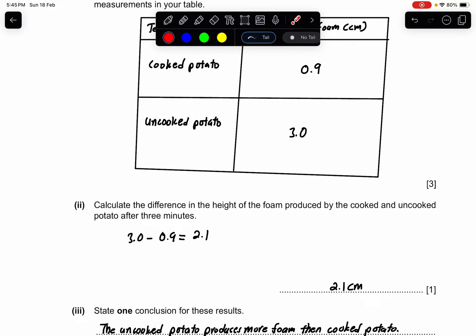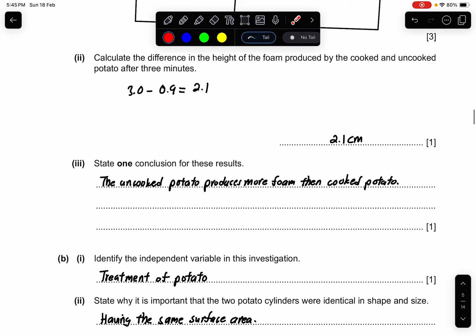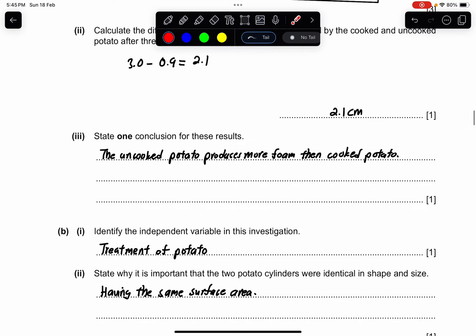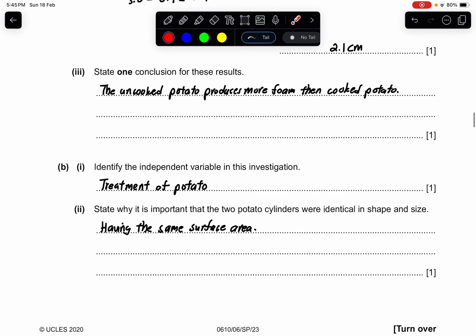Again, check the mark scheme for the range for your answer. It should be part of it if you do not have any errors in your calculation. Part 3: state one conclusion for these results. One conclusion for what I've seen is that the uncooked potato produces more foam than the cooked potato.